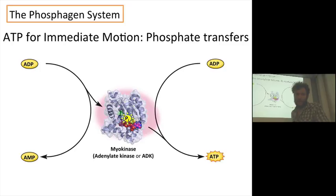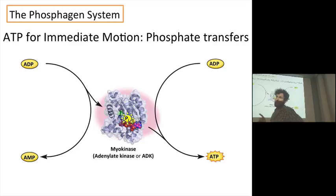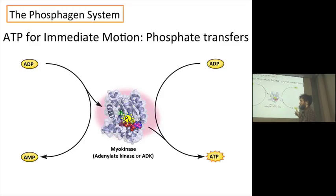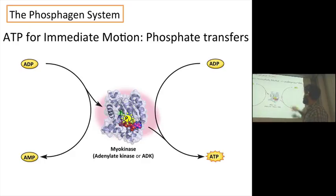The next is myokinase, also called adenylate kinase — a phosphate scavenger. When there's a lot of ADP around, myokinase takes the phosphate off one ADP and puts it on another, giving one ATP and one AMP. It's an emergency source: you get one ATP out of it. Myokinase is also part of the phosphagen system.